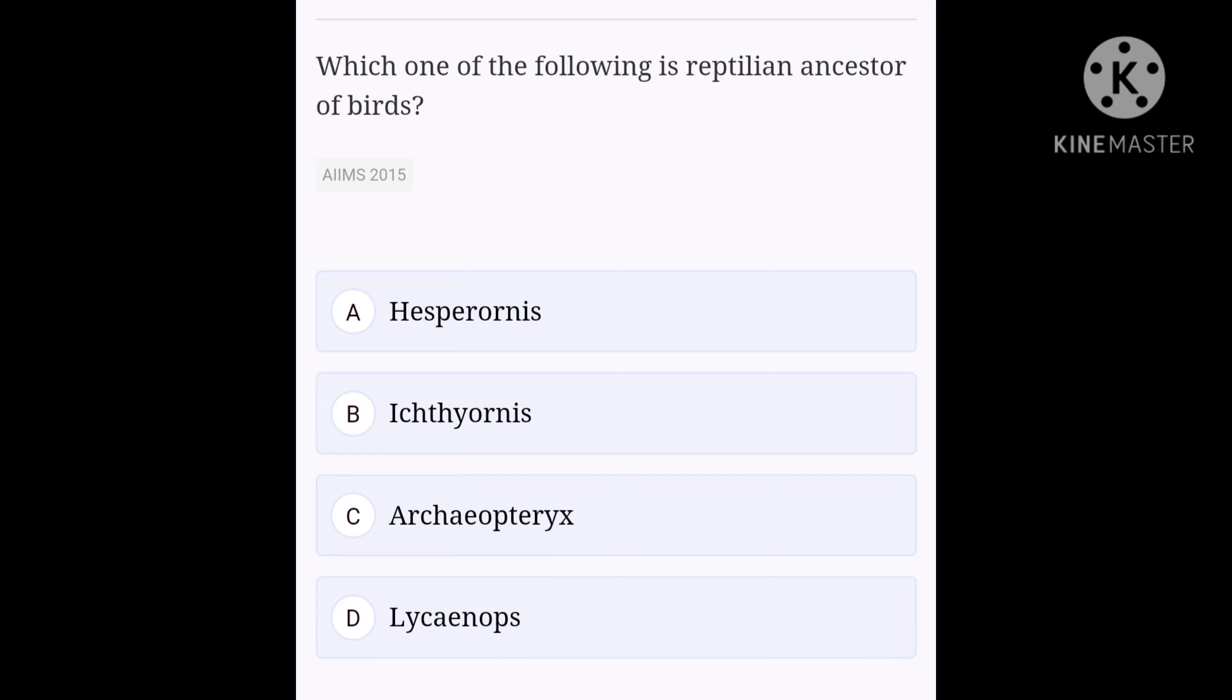Next question. Which of the following is a reptilian ancestor of birds? Option A: Hesperornis, option B: Ichthyornis, option C: Archaeopteryx, option D: Lycaenops.